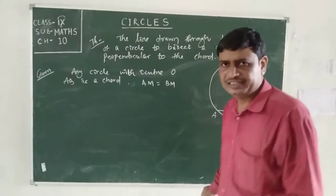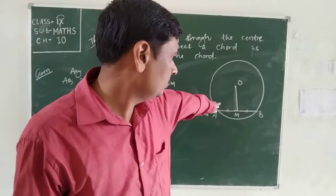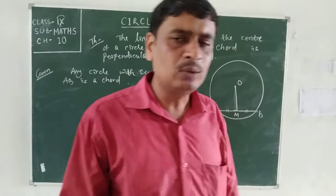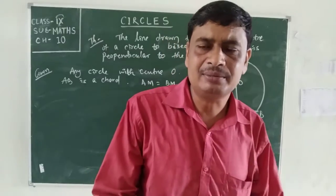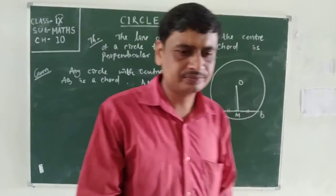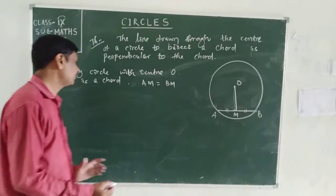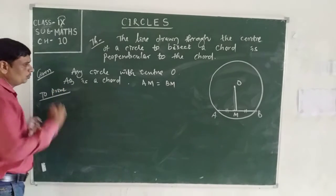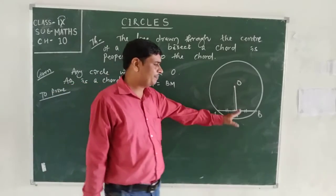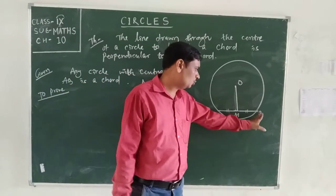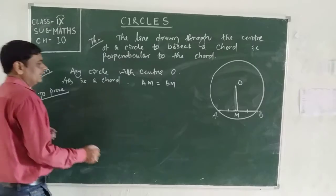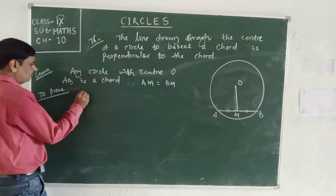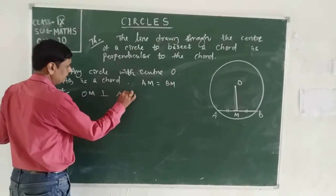AM and BM are equal — this is given in the question. Chord AB is bisected by OM, which means AM and BM are equal. We have to prove that OM is perpendicular to chord AB, i.e., OM ⊥ AB.